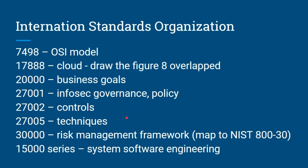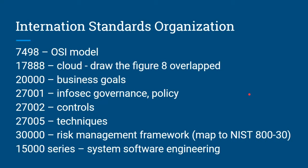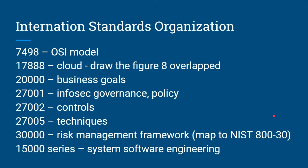ISO 27,005 gets into specific techniques, and 30,000 is the risk management framework, which you can associate with NIST 800-30. NIST 800-30 is the risk assessment, so it has the word 'risk' in it — just associate risk with risk, and link the 30 in 30,000 with 800-30. The 15,000 series covers system software.